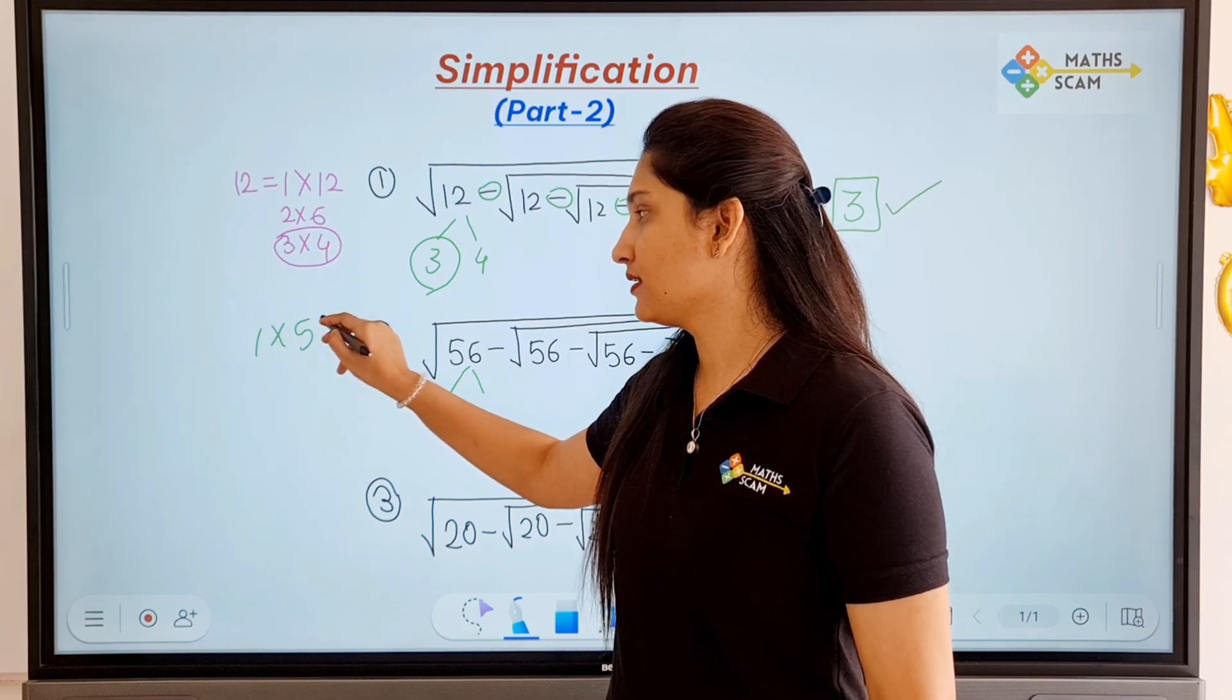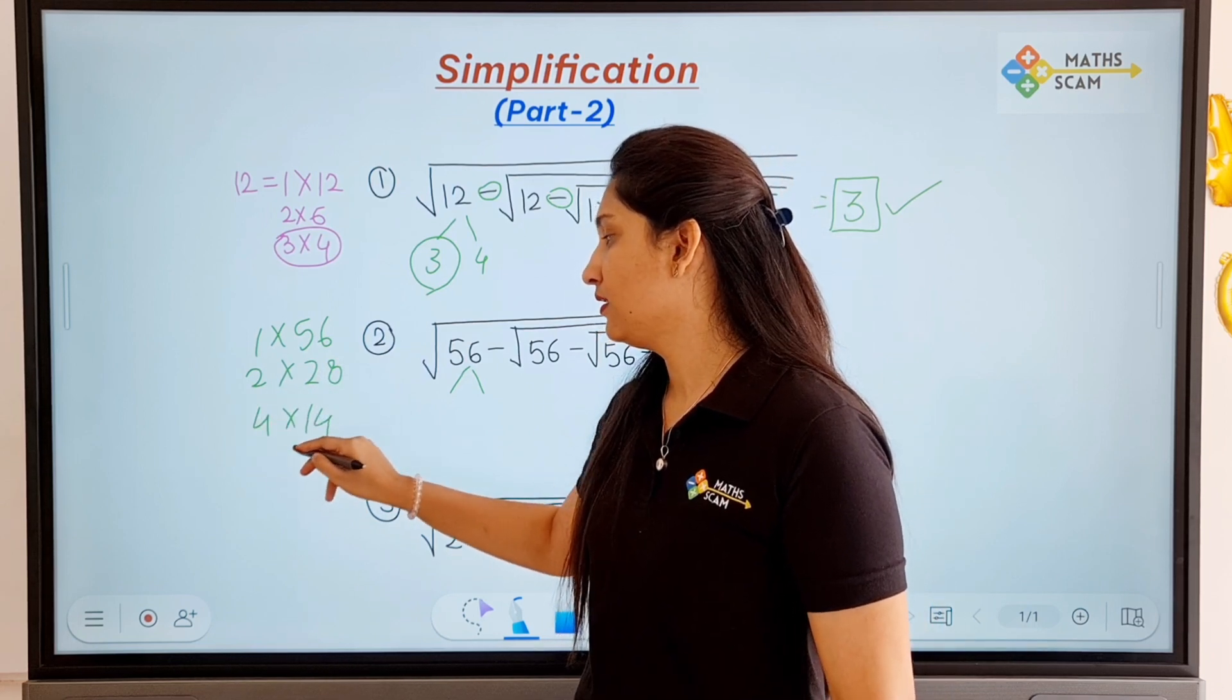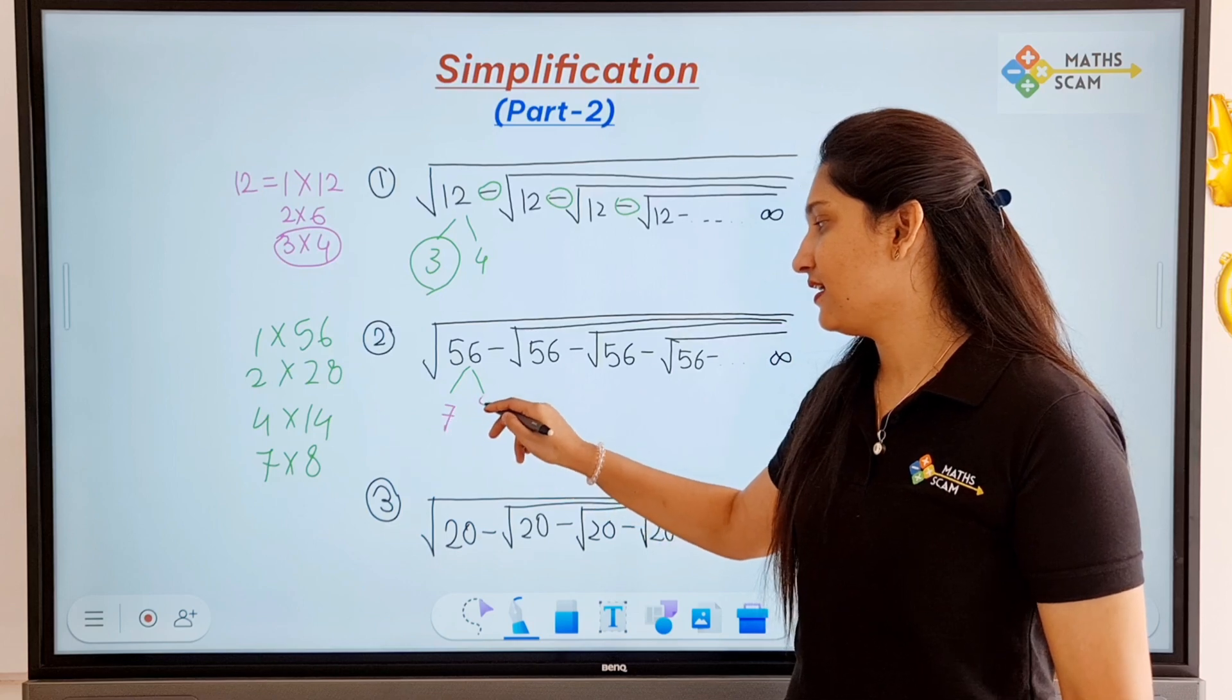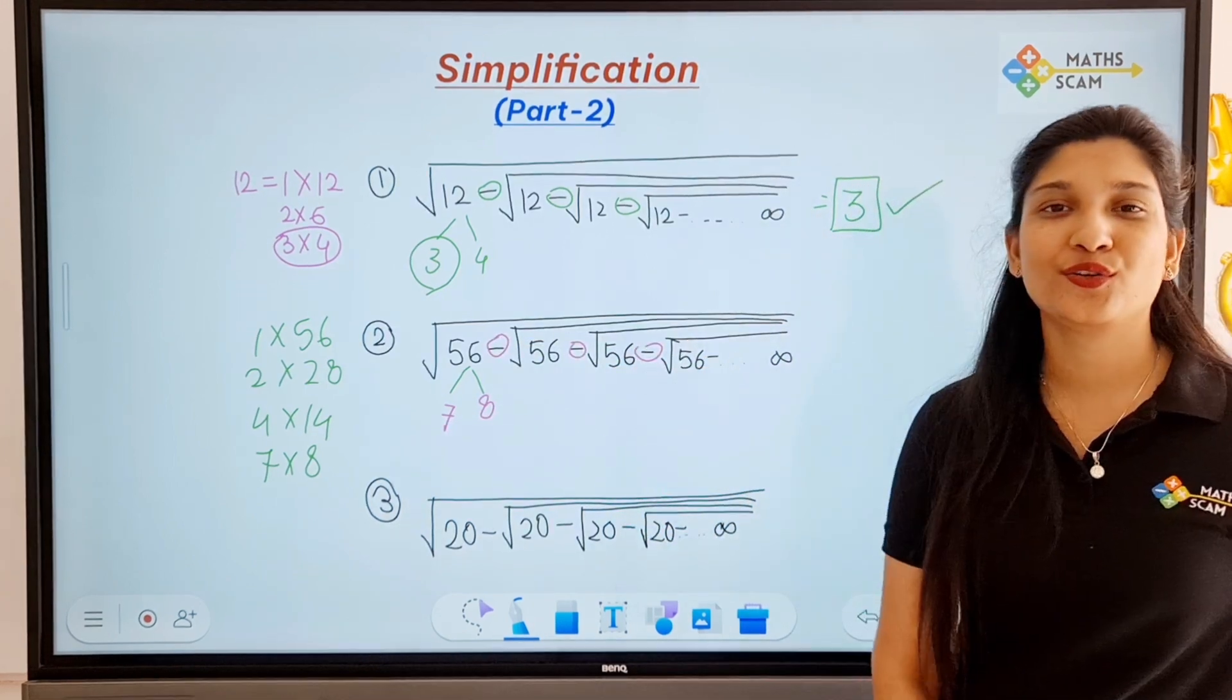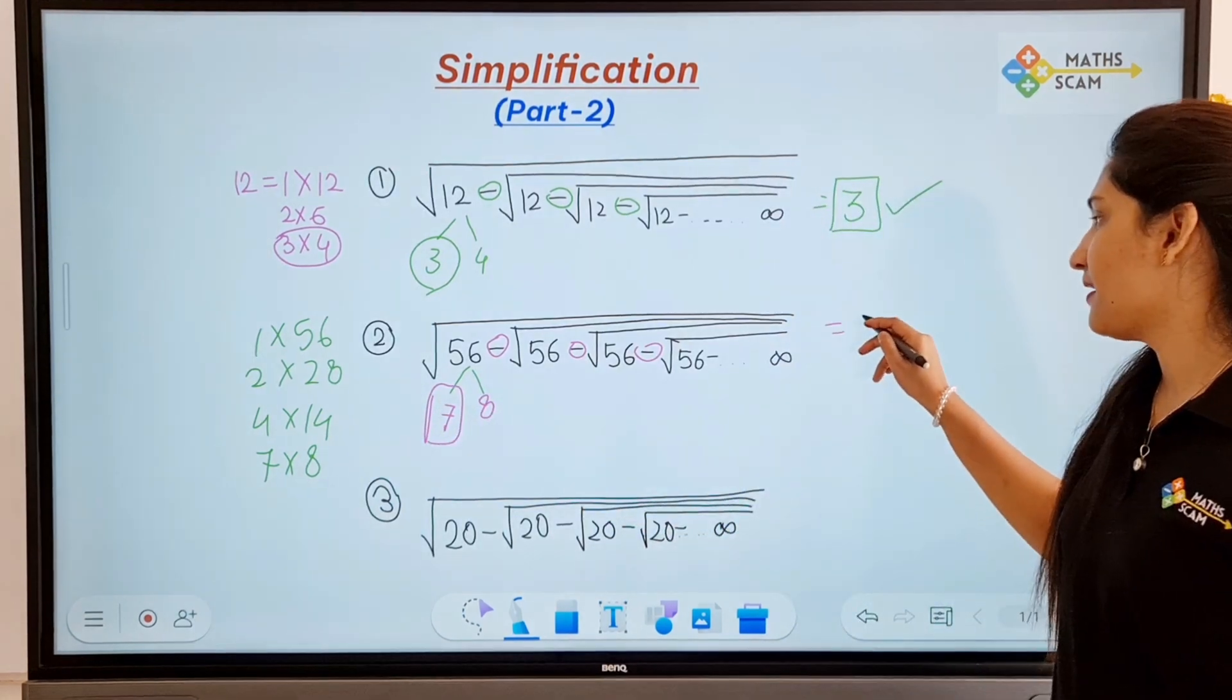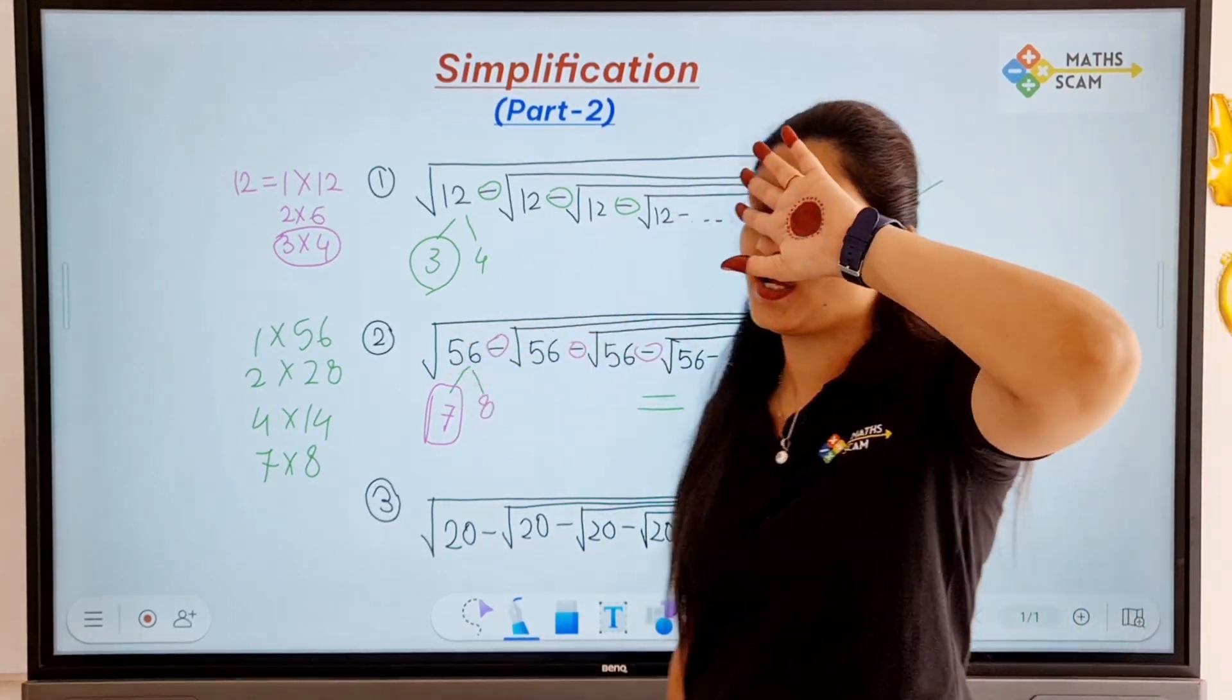Find out the factors of fifty-six: one into fifty-six, two into twenty-eight, then four into fourteen, then seven times eight. Which are the consecutive? Yes, that's correct—seven and eight. And because the sign is subtraction, we are going to choose the smallest factor.